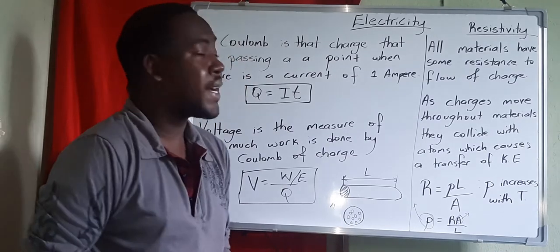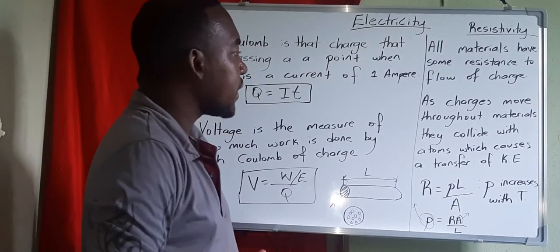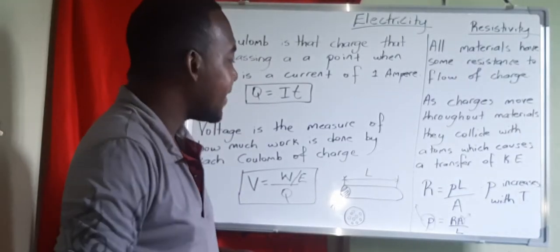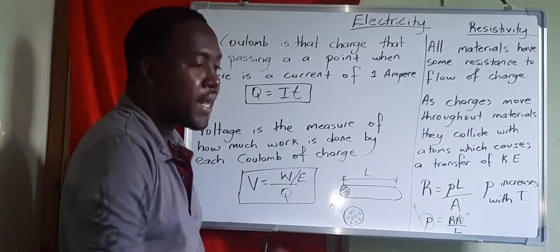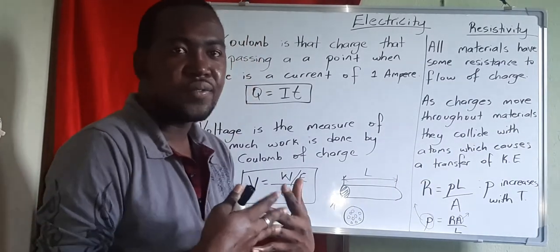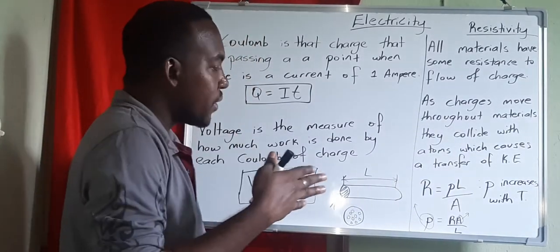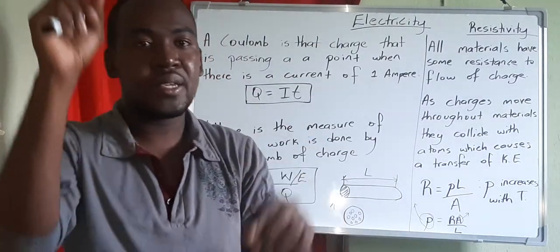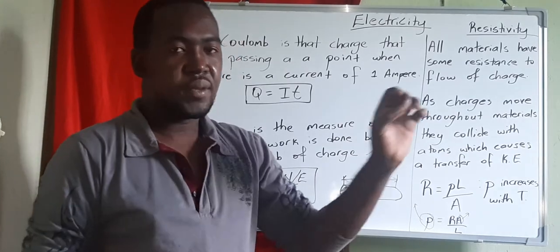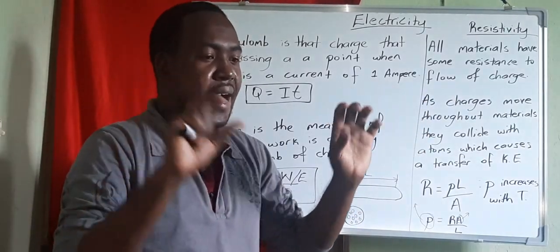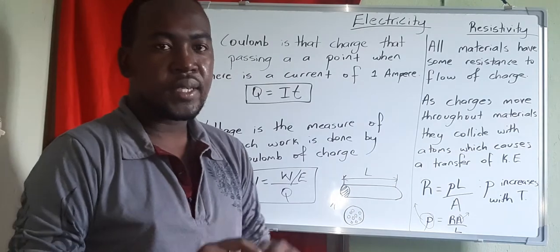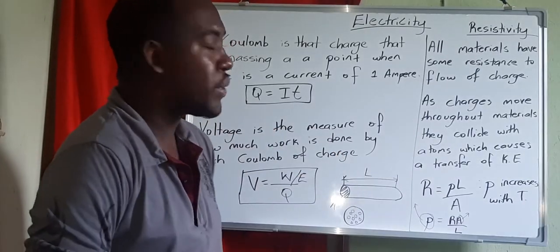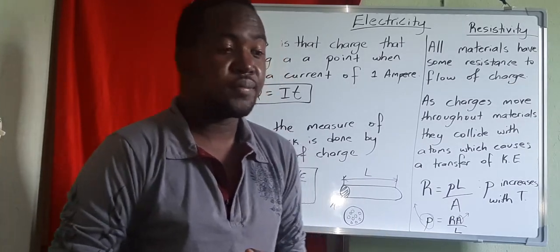Now we'll look at the last part of this lesson, which is deriving drift velocity. Drift velocity is the average velocity that electrons will have while passing through a material, because each time they collide with different atoms.